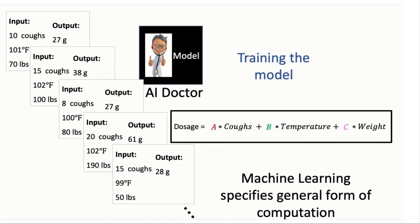For our AI doctor, we give the model many examples of patient information data, and here what makes a good output would be the correct corresponding dosage.